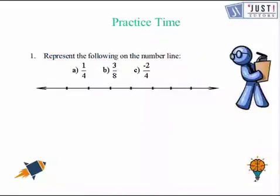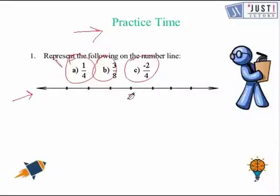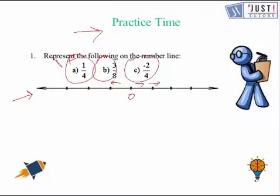Now we move to the final practice question. Here you need to mark the given numbers on the number line provided. Zero is at the origin. You'll find minus two over four on the left-hand side, three over eight on the right-hand side, and one over four also on the right-hand side. You can use the method we learned to represent these numbers on the number line.